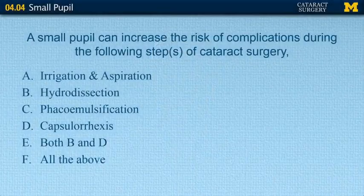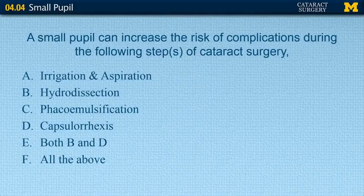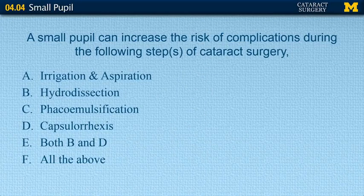We'll start with the pretest. First question: a small pupil can increase the risk of complications during the following steps of cataract surgery. A, irrigation and aspiration; B, hydrodissection; C, phacoemulsification; D, capsulorhexis; E, both B and D; and F, all the above.